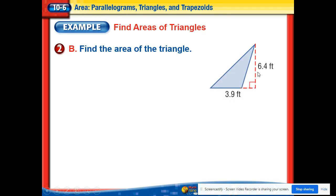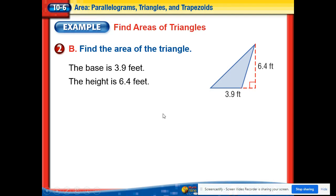3.9 and 6.4. Notice here, our height here is actually not inside the triangle. It happens sometimes like that. When we have a triangle like this, it's kind of leaning over. We can have a height that's outside the triangle. So 3.9 and 6.4.